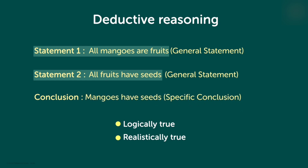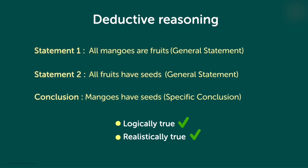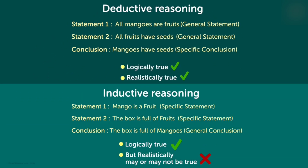Here statements 1 and 2 are true, and the conclusion will also always be true — all mangoes have seeds. So the two examples give us a clear idea about inductive and deductive reasoning. Take a few seconds to review both the cases.